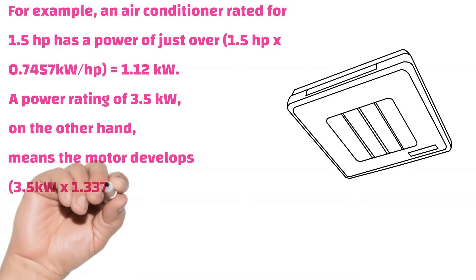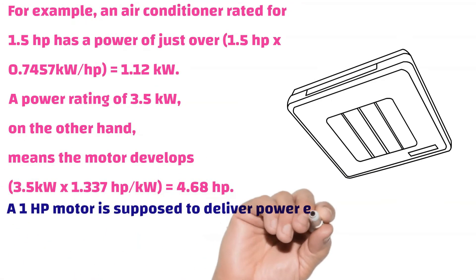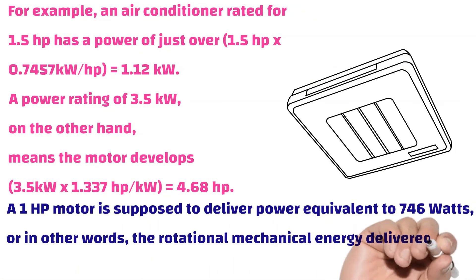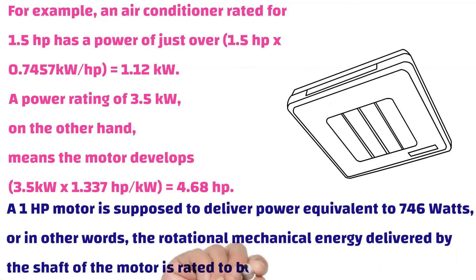A power rating of 3.5 kilowatts, on the other hand, means the motor develops 3.5 kilowatts into 1.34 horsepower equals 4.68 horsepower.